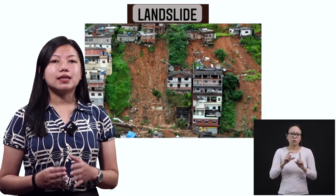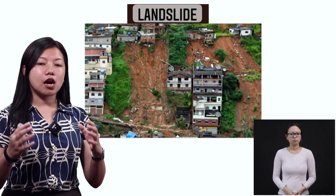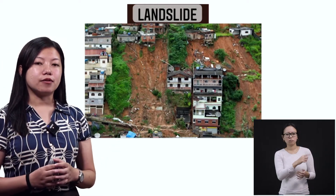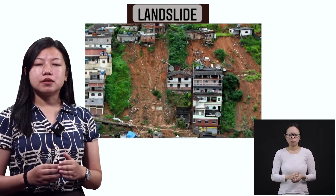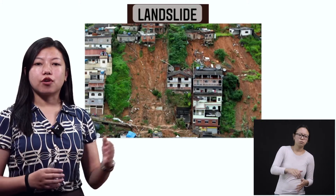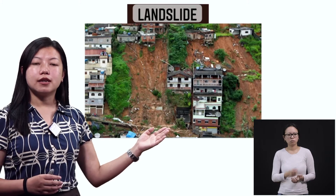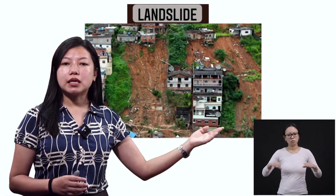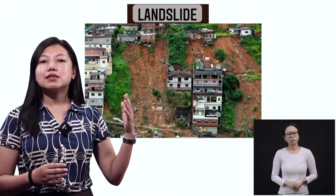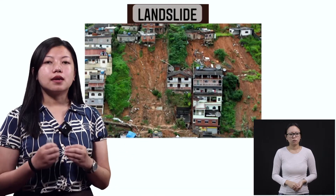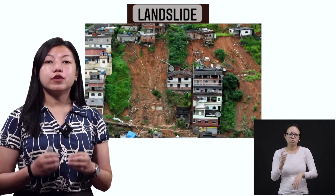Now let's start with landslide. In this picture you see a large mass of land that has fallen down. When it happens it causes destruction of homes — some houses are broken, buildings are damaged, and even trees fall down along with the mud. Landslides are a natural disaster but sometimes also happen because of humans.